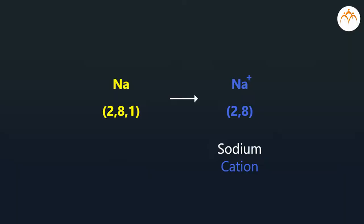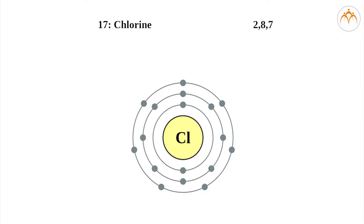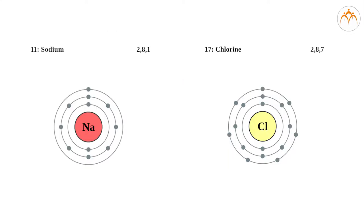Electronic configuration of chlorine is 2,8,7. To get 8 electrons in the outermost shell, it needs 1 electron. It takes this electron from the sodium atom. As a result, a negative ion of chlorine, an anion, is formed.